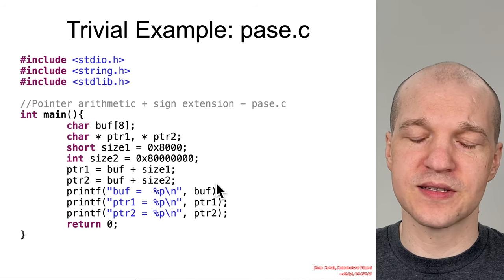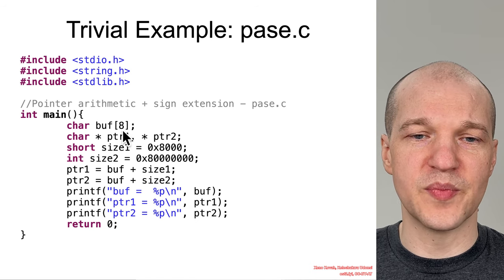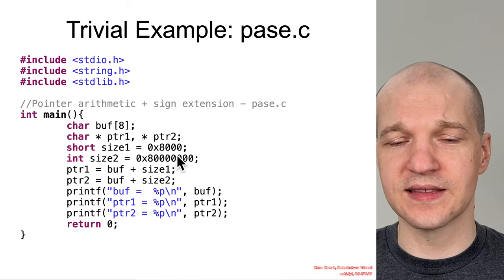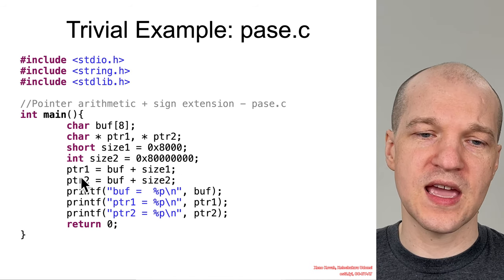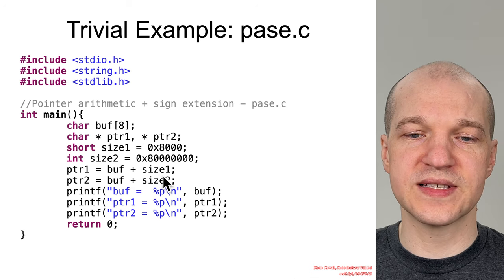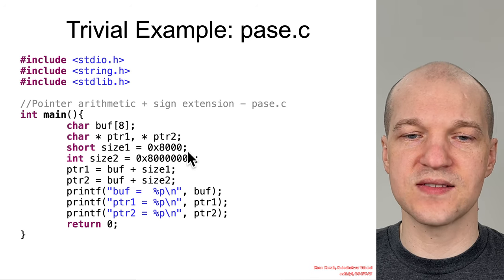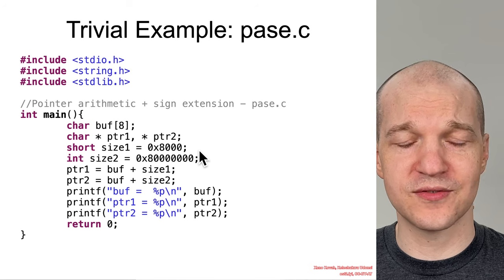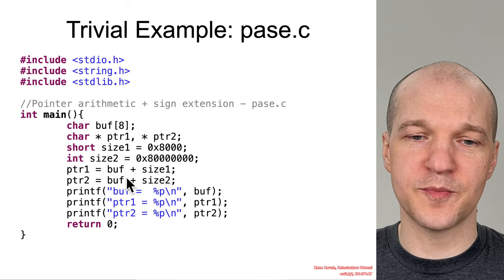Here is some simple trivial code. We've got a buffer, pointer 1, pointer 2, size 1 = hex 8000, size 2 = 8 followed by 7 zeros. Pointer 1 is going to be buff plus size 1 — so buff plus 8000. That's clearly going to be an out-of-bounds type of thing, but that's not the point right now.